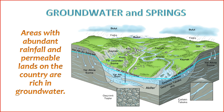2. Topography — the topography of an area affects the potential of springs. Groundwater tends to flow from higher elevations to lower elevations, and springs often emerge where groundwater intersects the land surface. 3. Climate — climate plays a crucial role in groundwater potential. Areas with higher precipitation rates contribute more water to underground aquifers. Additionally, the temperature affects the rate of evaporation and, consequently, groundwater recharge.